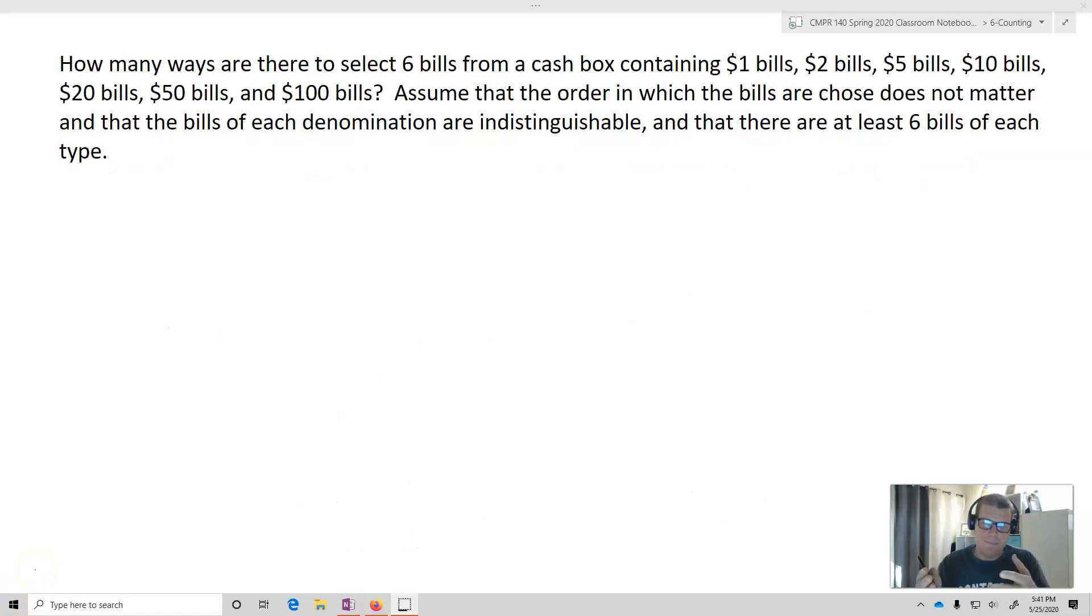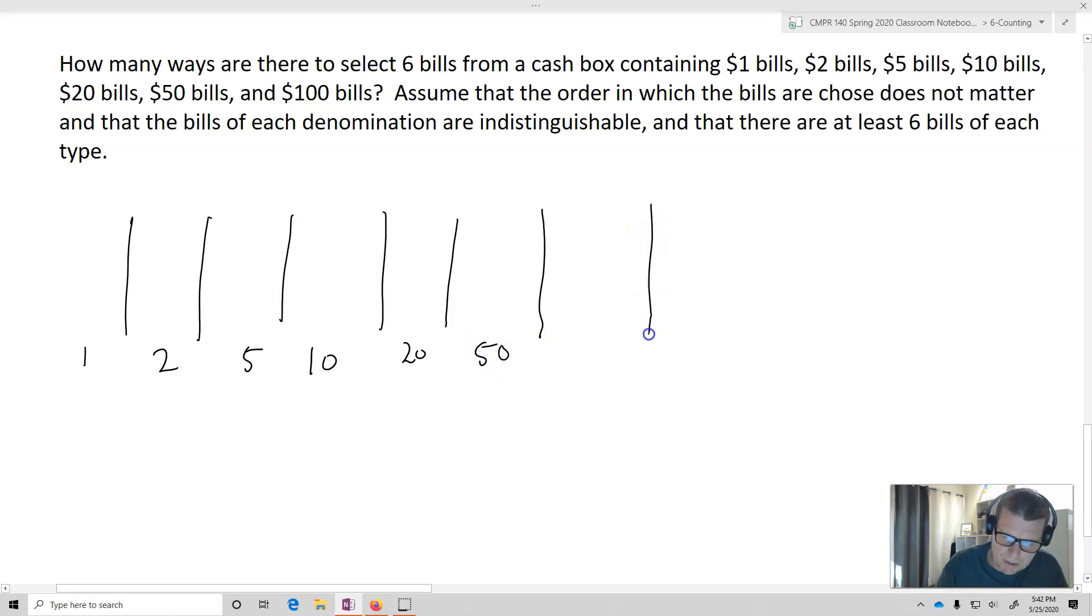Let's suppose we have this kind of example. How many ways are there to select six bills from a cash box containing $1 bills, $2 bills, $5 bills, $10 bills, $20 bills, $50 bills, and $100 bills? So now what we're going to do is imagine I've got my cash box. Here's my $1s, my $2s, my $5s, my $10s, my $20s, my $50s, and my $100 bills.